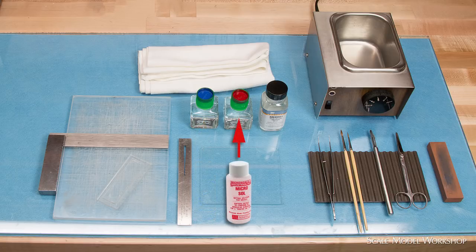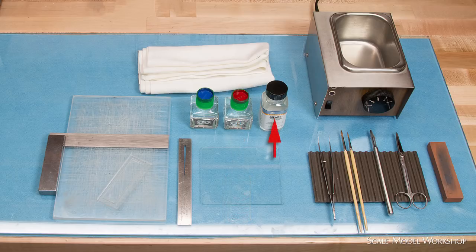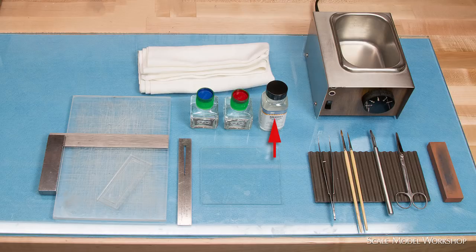Microsol, also manufactured by Microscale, is used on the surface of the decal to soften it and allow the decal to conform to the surface. Solvaset, now manufactured by Walthers, is also used to soften the decal. Its action is somewhat more aggressive than Microsol.